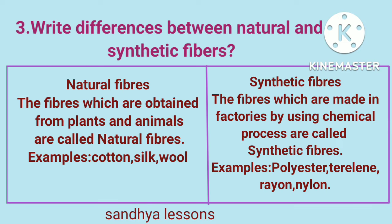Third question: Write the differences between natural and synthetic fibers. Natural fibers: the fibers obtained from plants and animals are called natural fibers. Examples: cotton, silk, wool. Synthetic fibers: the fibers made in factories by using a chemical process are called synthetic fibers. Examples: polyester, terylene, rayon, nylon.